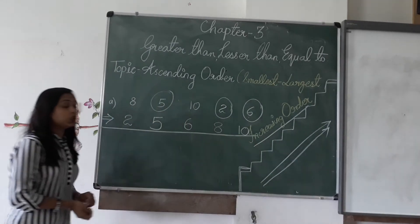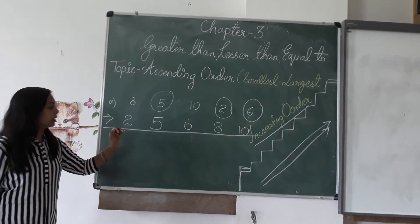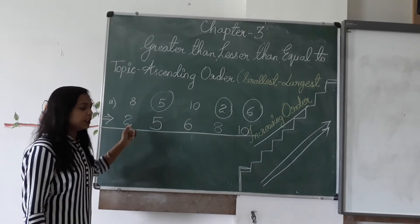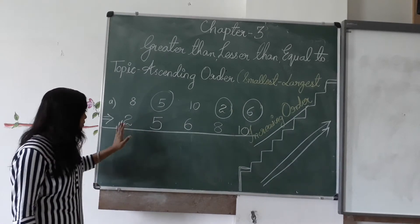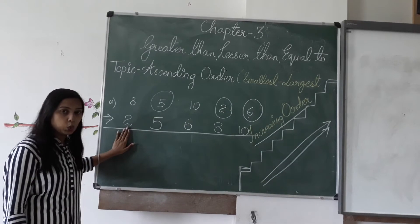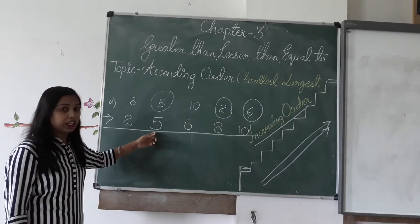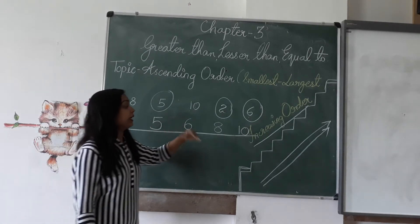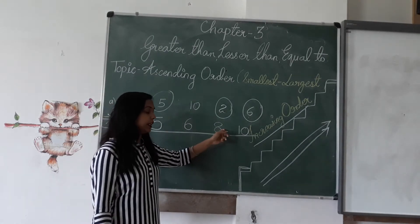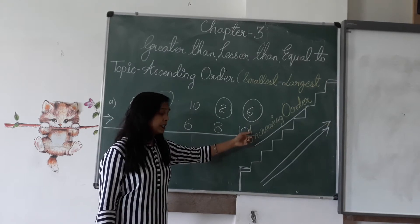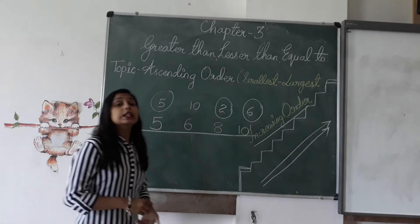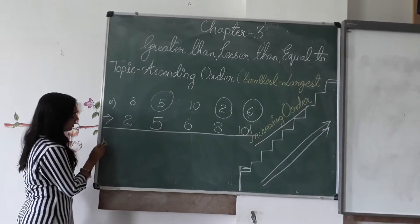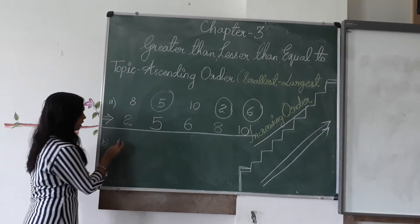Chhote se bada — from smallest to greatest. The ascending order is: two, five, six, eight, ten. Each number is a little bit greater than the previous one, and the highest number is ten.